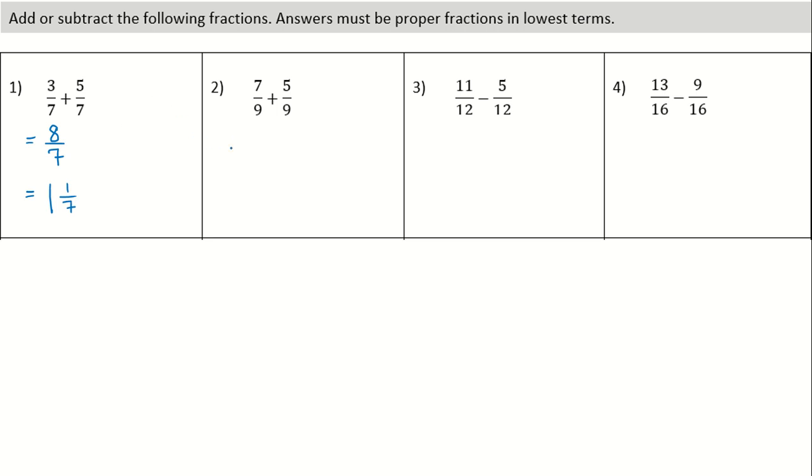In example number 2, we have a like denominator of 9. So we can start off by writing that in. And then let's add up these numerators. 7 plus 5 is 12. Alright, well we have a couple things going on. One, this is not in lowest terms. And two, it's improper.